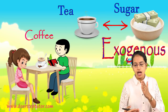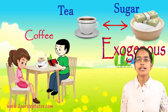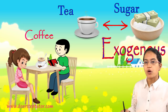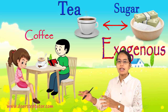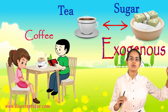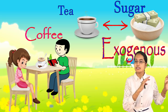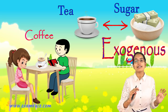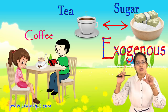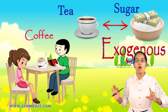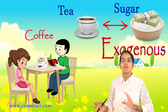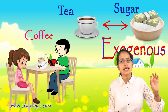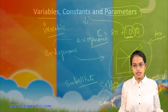Exogenous variables are those whose solutions are outside the model. When talking about tea, items like coffee or sugar — substitutes or complements — are outside the model of tea and are therefore considered exogenous variables.